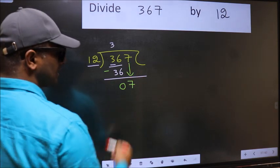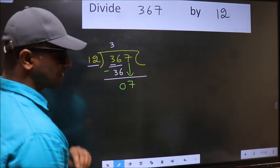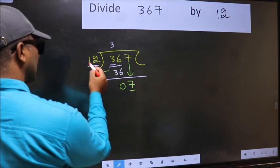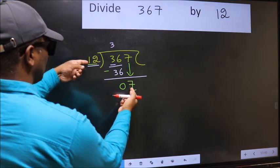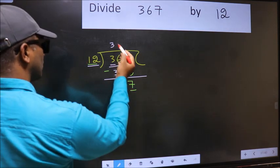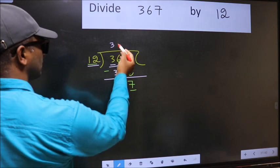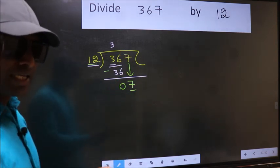After this step, the mistake happens. And the mistake is this: Here we have 7 and here 12. 7 is smaller than 12. So what many do is they directly put dot and take 0, which is wrong. Why is it wrong?